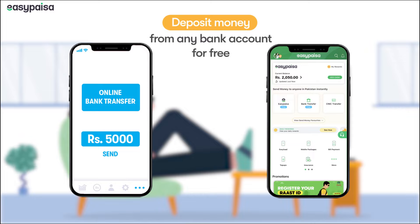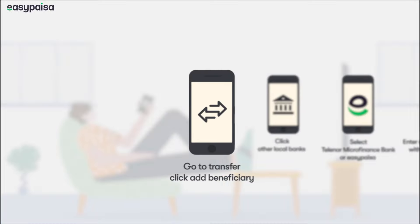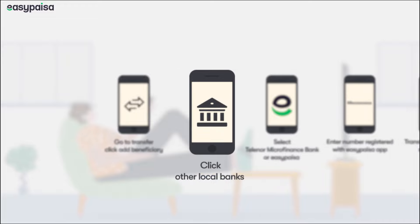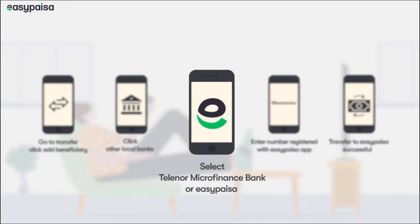Log in to your online banking portal, go to transfers and click add beneficiary. In select beneficiary type, click other local banks. Then select Telenor Microfinance Bank or EasyPesa.